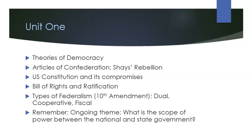The first constitution of the United States is the Articles of Confederation, but it is plagued by a lot of weaknesses. There's no executive branch, no national court, no way to tax at the national level, and you can't raise an army. This comes to a head with Shays' Rebellion when the government is unable to put down that rebellion, and the Founding Fathers get together in Philadelphia and scrap this constitution in favor of the U.S. Constitution that we have.